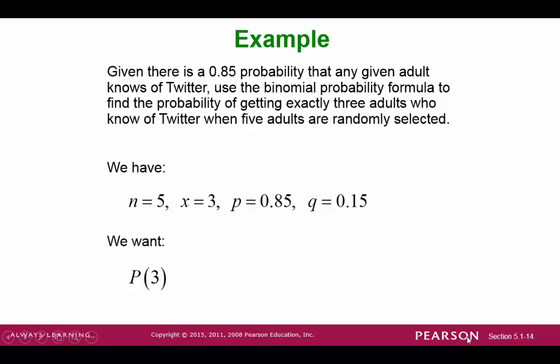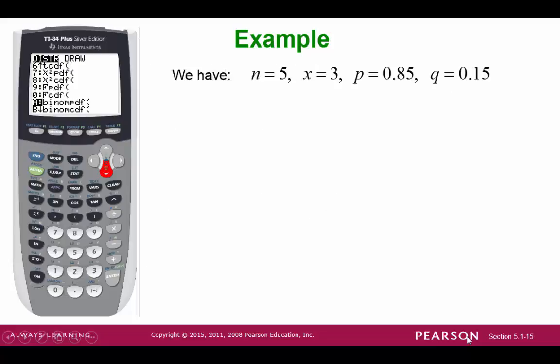Let's go back to that Twitter example again. Suppose we want to find the probability that exactly 3 out of 5 adults know of Twitter. In this example, we use the calculator.